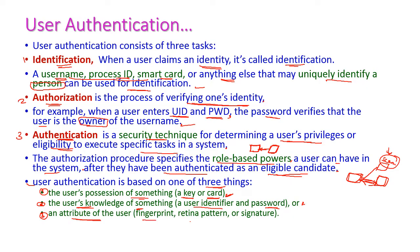The user's attributes include fingerprint, retina, and signature. Everything comes under the attribute of the user. So using the user's object, user's knowledge (user ID and password), and user's attribute — by using these three, authentication will verify whether the user is an authorized user or not.